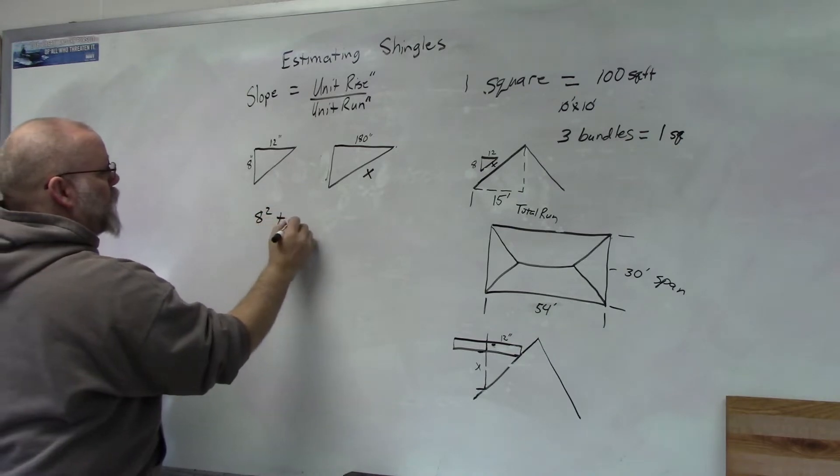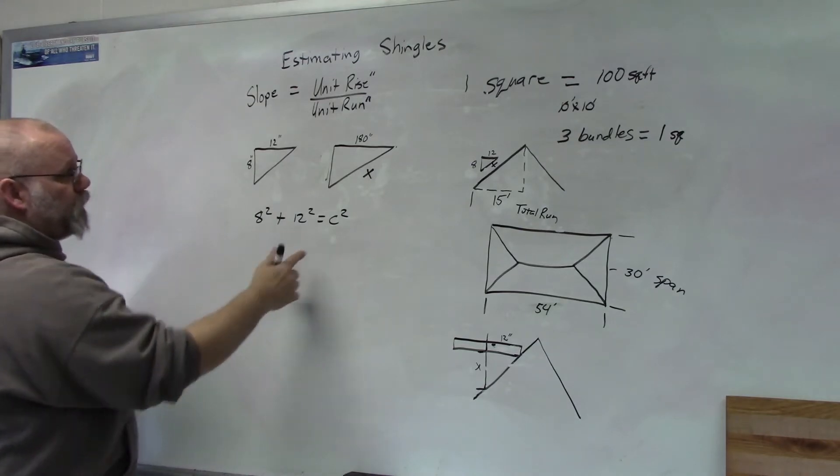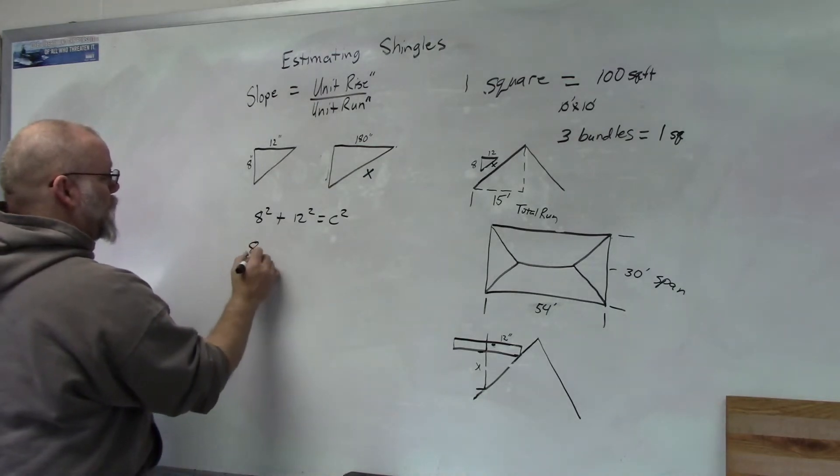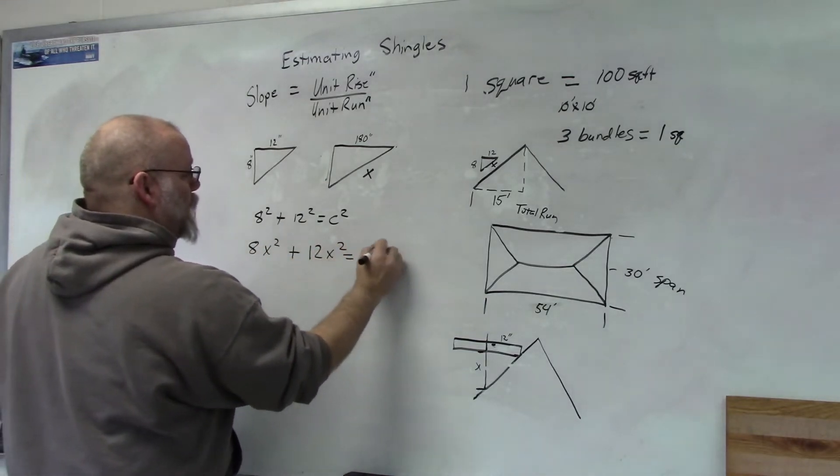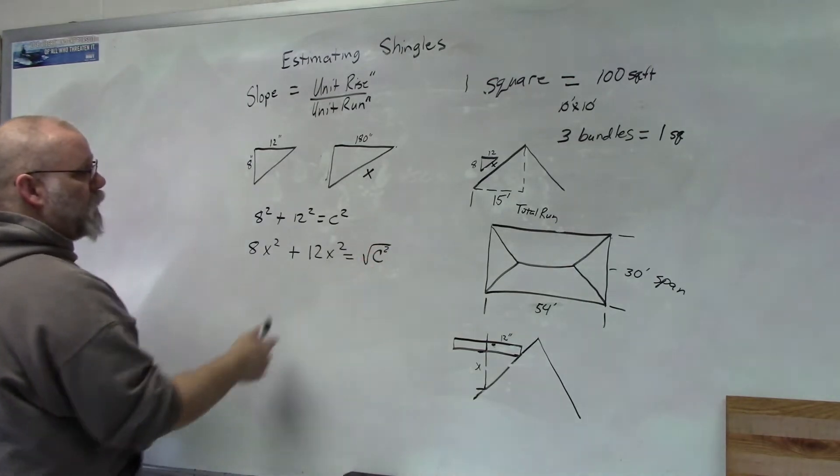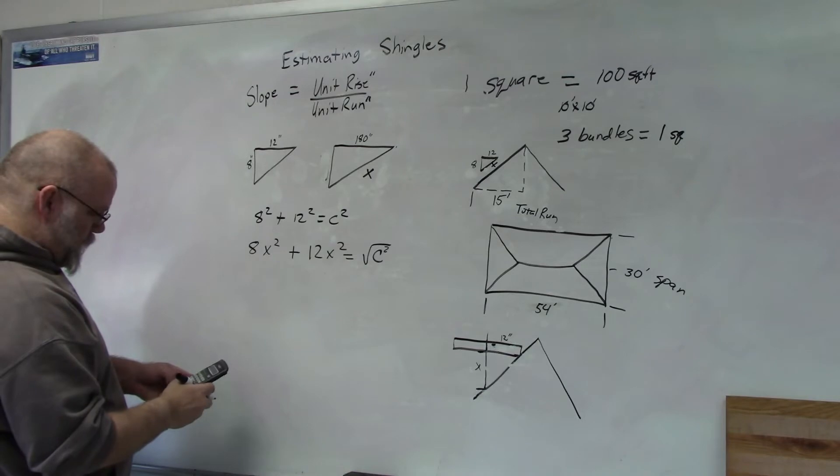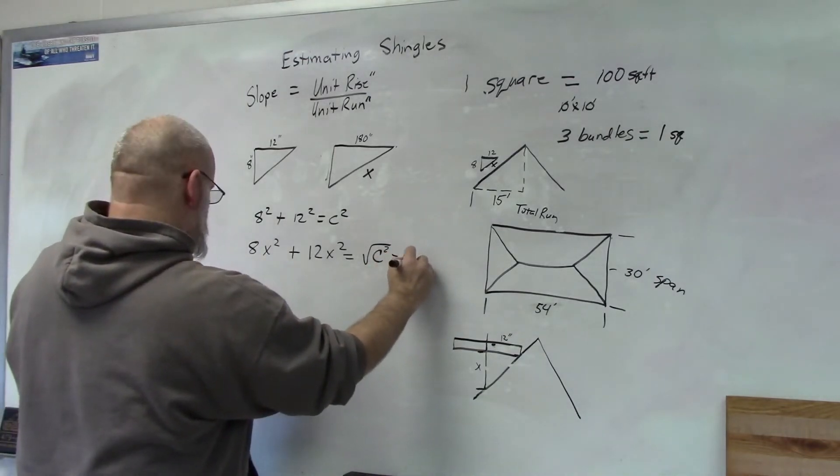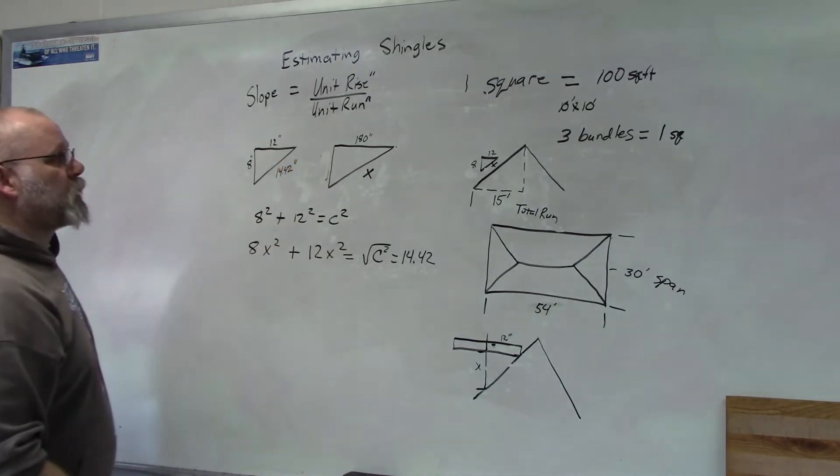I'm going to put 8 squared plus 12 squared equals C squared into the calculator. So 8 squared plus 12 squared equals square root, and I get 14.42. So this is 14.42 inches. Now I can find out what this number is here.